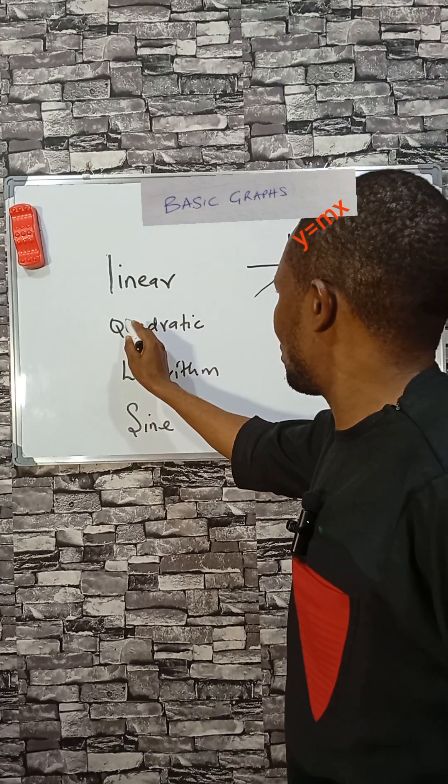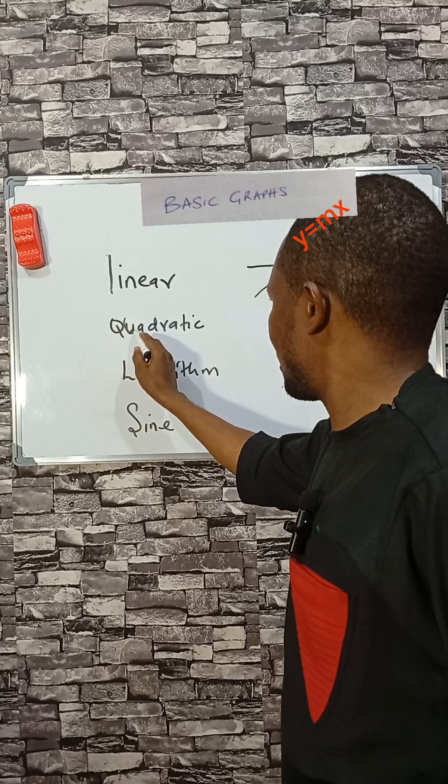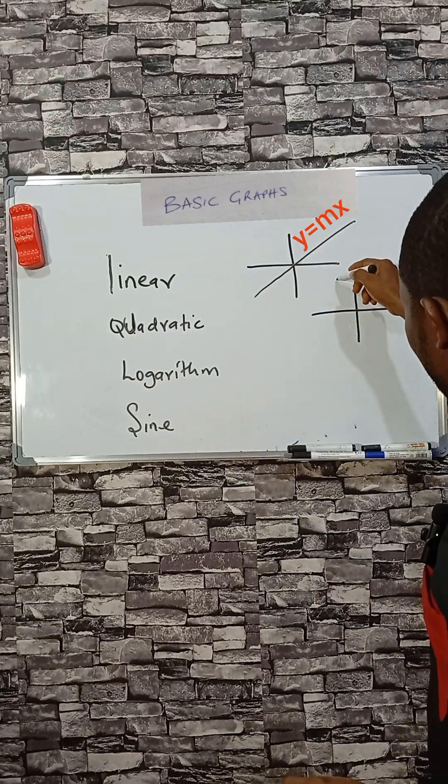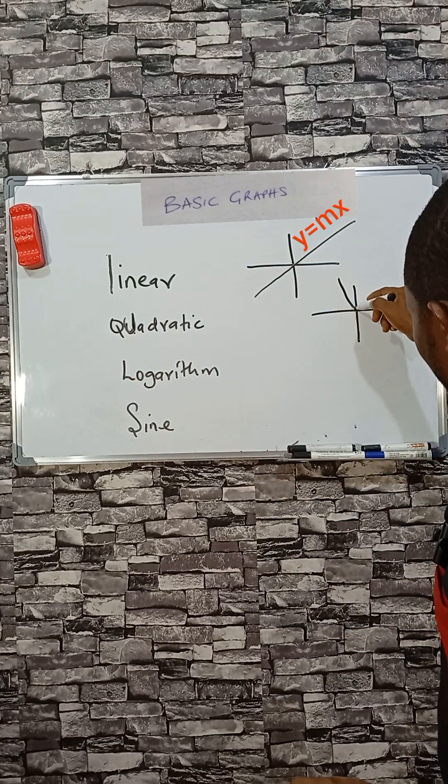Now a quadratic graph looks just like the letter U, like this.